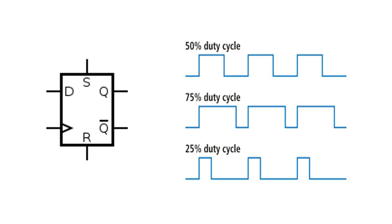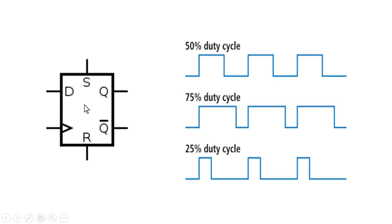A flip-flop cannot work on a clock with any arbitrary duty cycle, because the flip-flop demands that the logic high inside the clock signal remain for some minimum time, and similarly the logic low must remain for some minimum time. Only then will the flip-flop work properly; otherwise it can enter a metastable state. In the next part of the video we will discuss why a flip-flop requires this minimum logic high time and minimum logic low time.